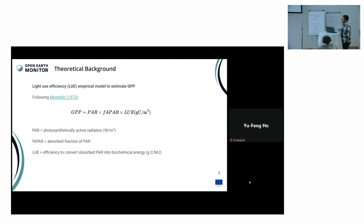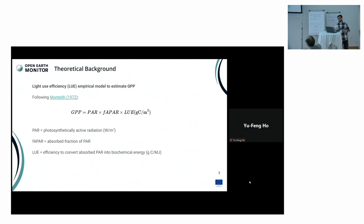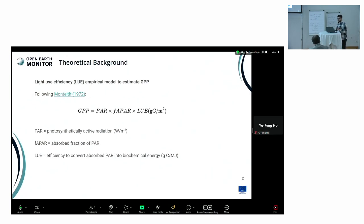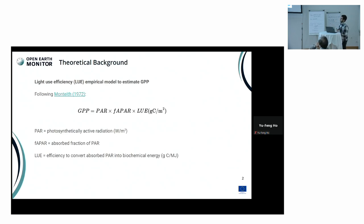For the theoretical background, this is the foundation of the process-based model we use for gross primary productivity. It's basically a light use efficiency model that creates a relationship between the incoming radiation, the amount of absorbed fraction of this solar radiation, and how efficient the vegetation layer — the biomass — uses this radiation to convert the available carbon intake. It has three parts: the photosynthetic active radiation, the fraction of the absorbed radiation, and the light use efficiency part.